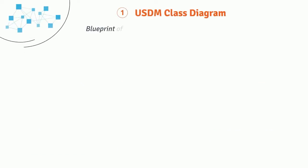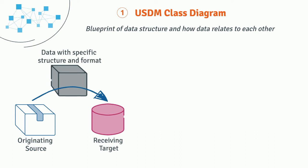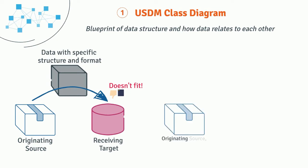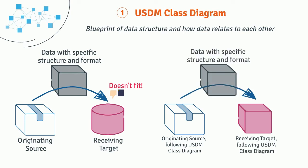The USDM class diagram is the blueprint of data structure and how the data relates to each other. Systems integration involves moving data between systems, like moving content from one box to another. If the boxes aren't the same size, it is difficult to move data easily — similar to fitting a square peg into a round hole. Having a standard class diagram applied to systems can make integration much easier to achieve.